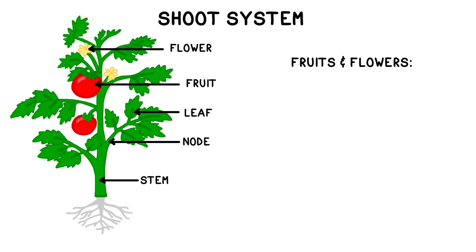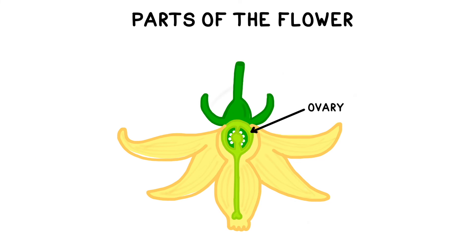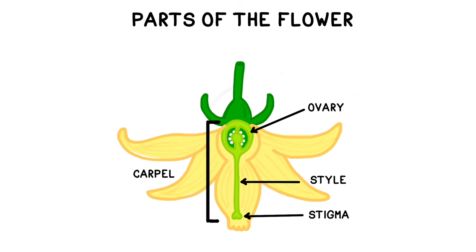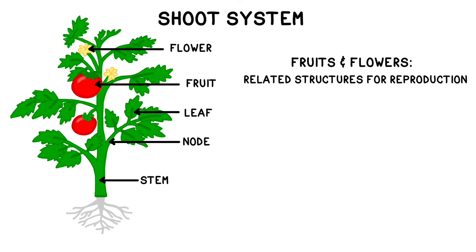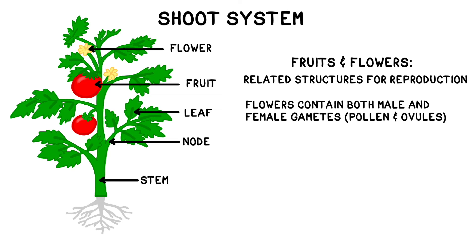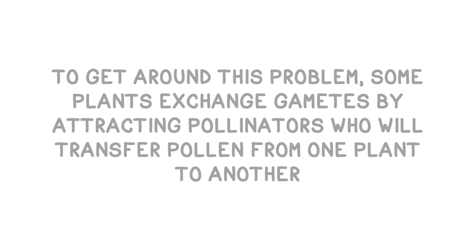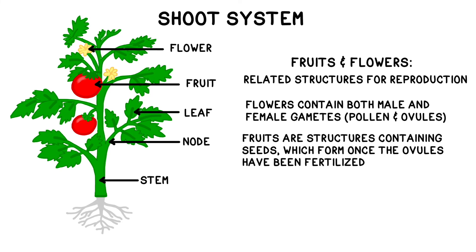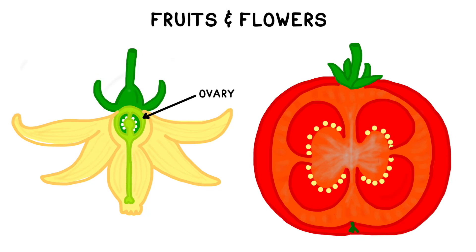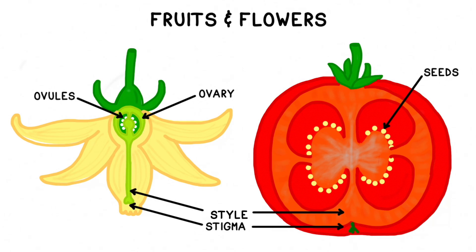Flowers and fruits are related organs that are both part of the plant's reproductive system. The three female plant structures — the ovary, the style, and the stigma — are collectively known as the carpel. Flowers contain both male and female gametes, pollen and ovules respectively, but many plants can't self-fertilize. To get around this, some exchange gametes by attracting pollinators who will transfer pollen from one plant to another. Fruits are structures containing seeds, which form from the ovary at the base of the flower once it has been fertilized. After the ovules are fertilized, the petals drop away and the ovary swells and grows into a fruit containing the seed or seeds.